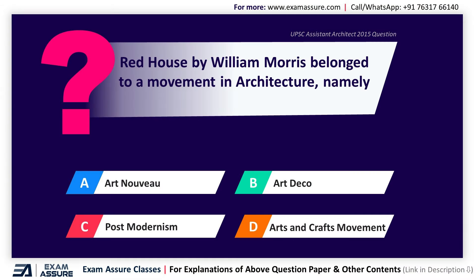Next question. Red House by William Morris belonged to the movement in architecture namely — Option A: Art Nouveau, Option B: Art Deco, Option C: Postmodernism, Option D: Arts and Crafts Movement. The correct answer is Option D, Arts and Crafts Movement.